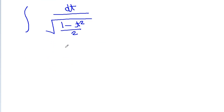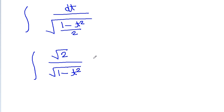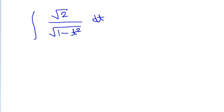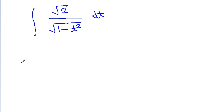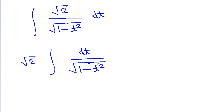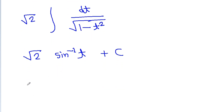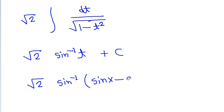It is integration of root 2 by root of 1 minus t² dt. We can take root 2 out of the integration, so we get root 2 times integration of dt by root of 1 minus t². And we get root 2 times sin inverse t. Since it is indefinite integration, we need to add a constant term c. So, we get root 2 times sin inverse of (sin x minus cos x) plus c. So, it is the result of the integration.